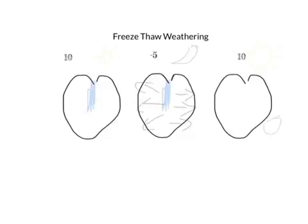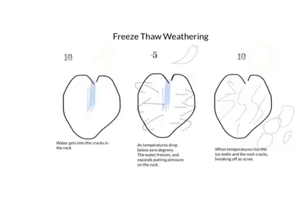The third rock — that expansion then causes the rock to break up, the cracks to form, and then small fragments of rock to fall off. Of course, make sure you annotate each one.